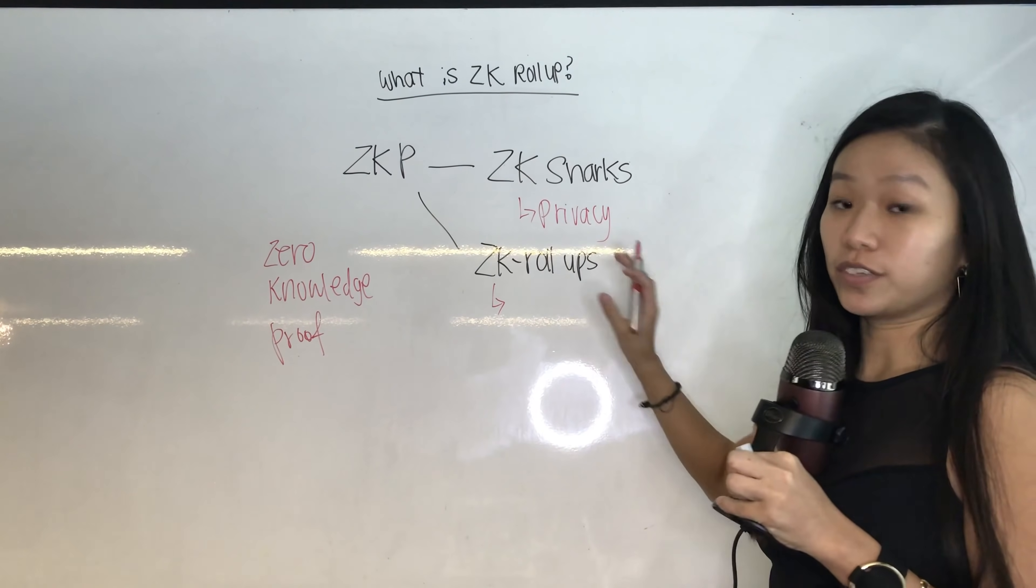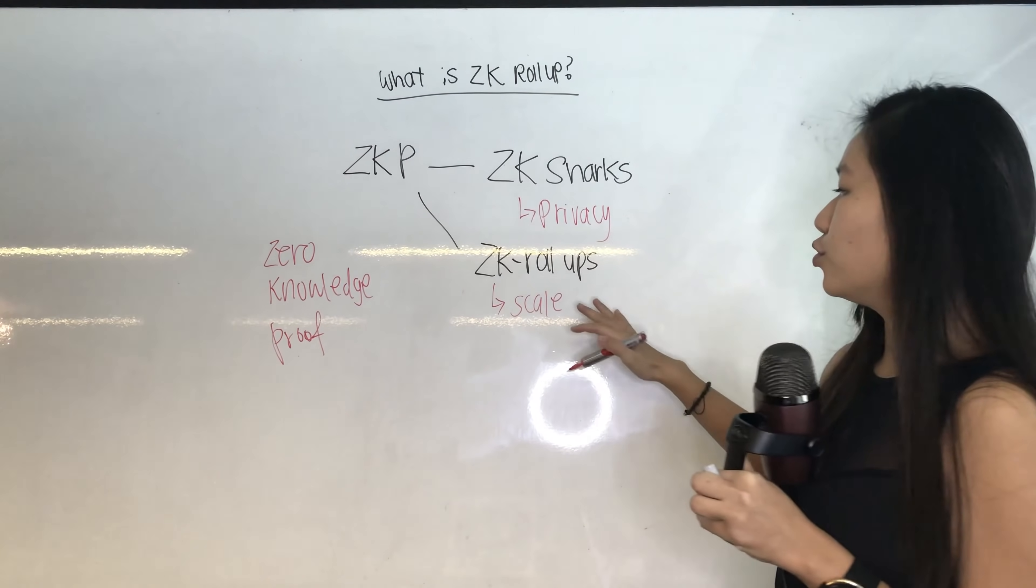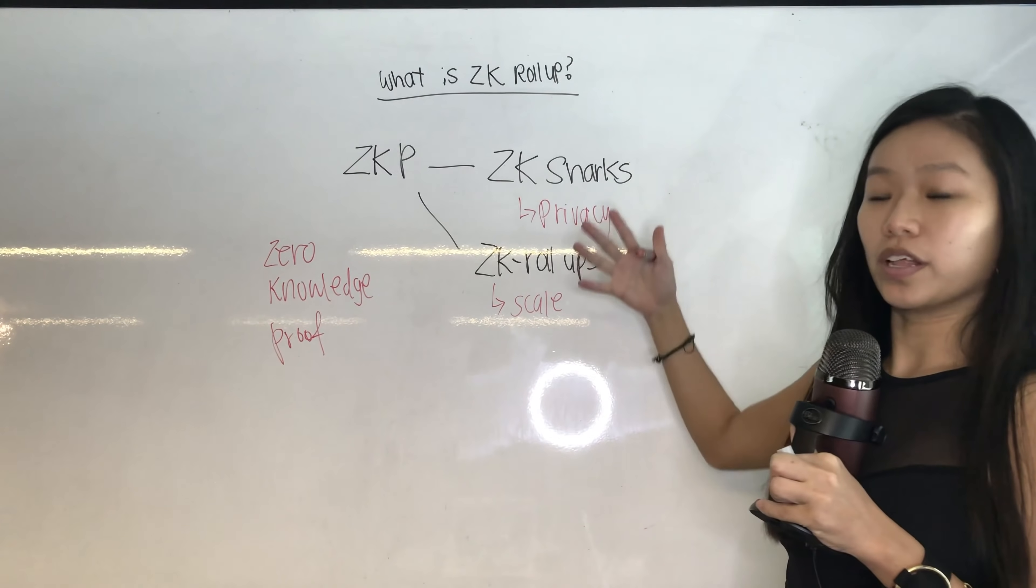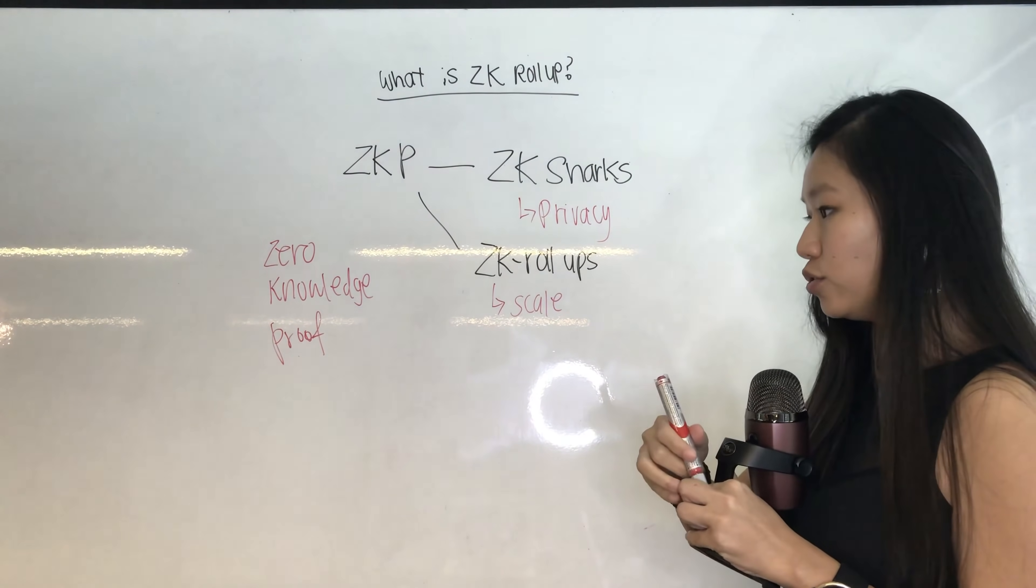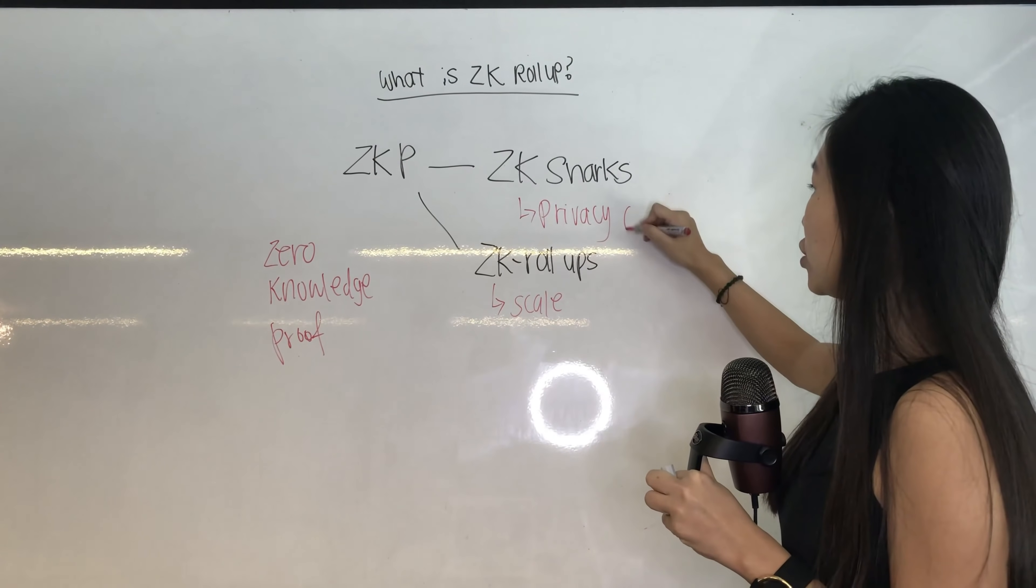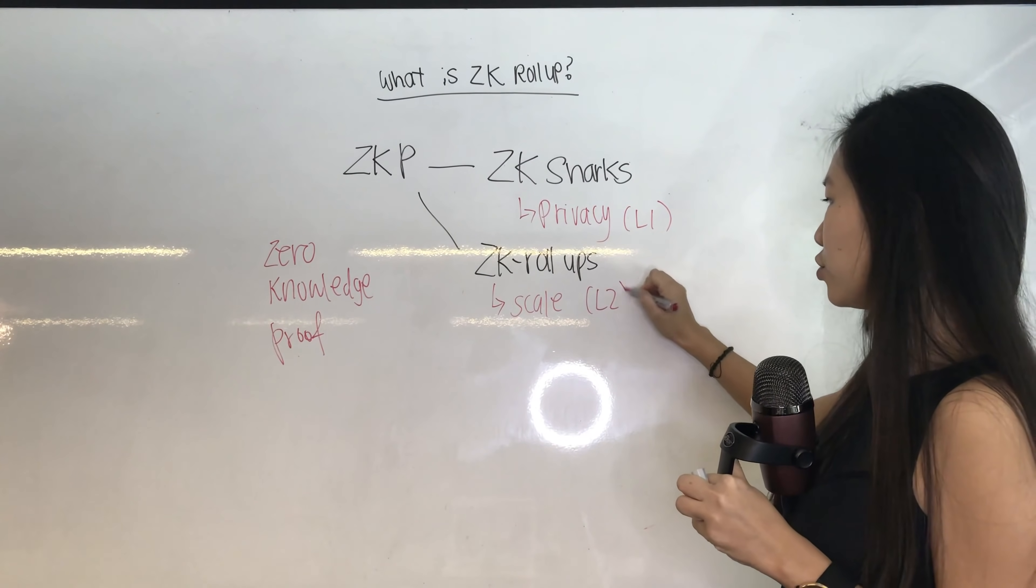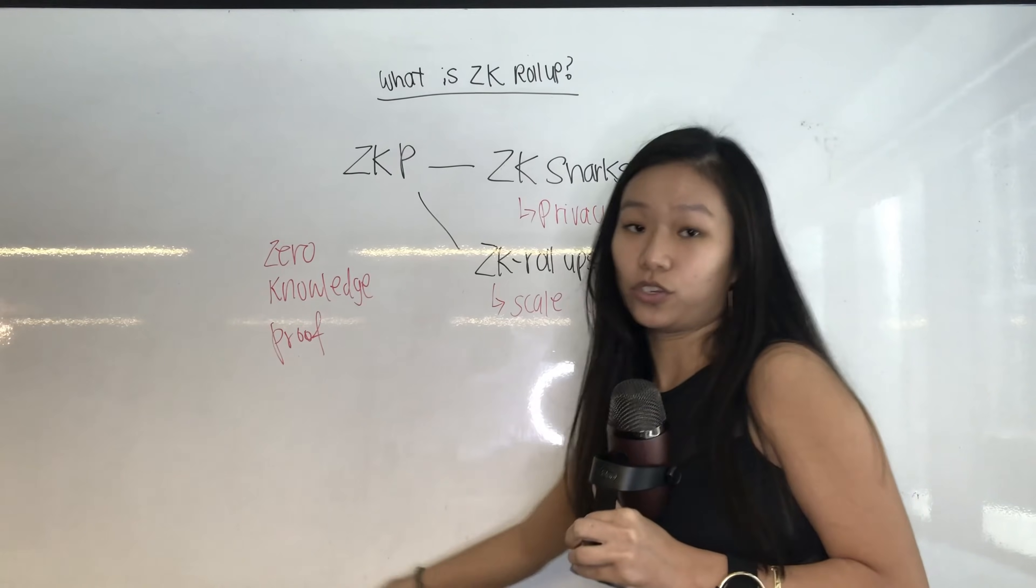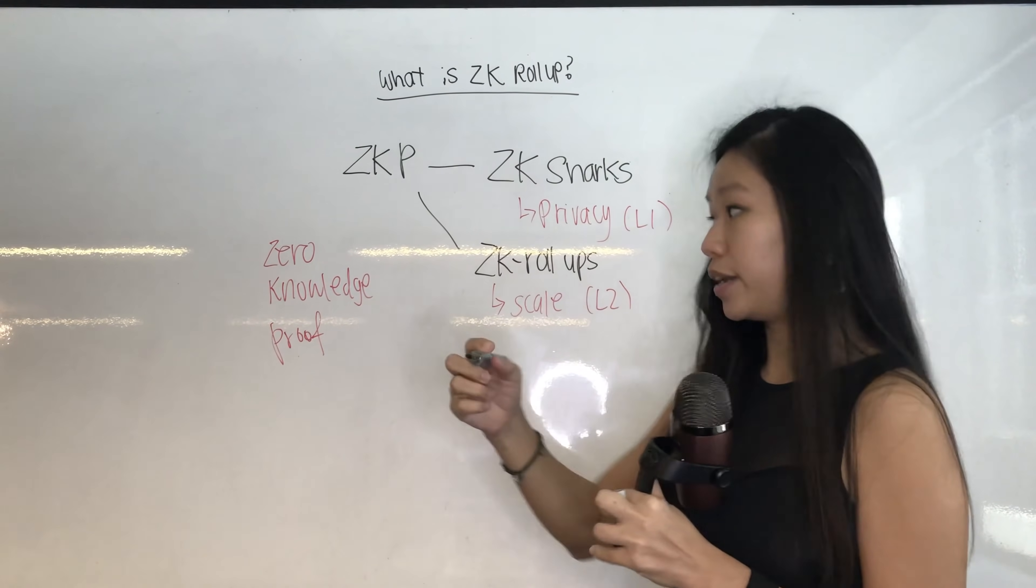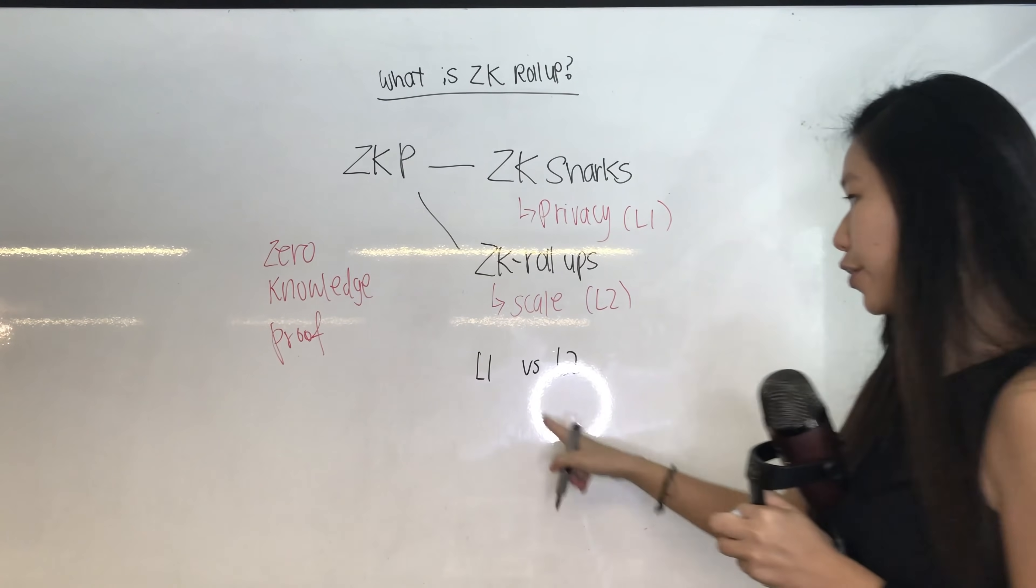ZK Rollups however is a different thing. It's for scalability. You want the transactions to scale up, you want the layer one solutions to scale up. So ZK Snarks is usually used in the layer one solution, whereas ZK Rollups is used in layer two solutions. What is layer one and what is layer two? What are the differences and what are the similarities? Let's do a quick understanding of what they are.